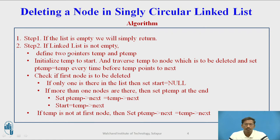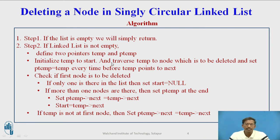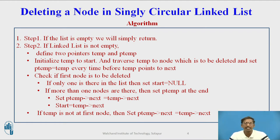Step two: if the singly circular linked list is not empty, then define two pointers — temp and ptemp. Some programs use three pointers instead of two, but we only require two. temp will always point to the node which is to be deleted. Initialize temp to start, then traverse temp to that node. Every time before temp moves forward, set ptemp equal to temp, so ptemp always points to the previous node of temp. Some programs also use ntemp, which points to the node next to temp.